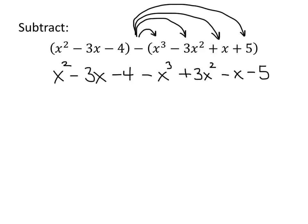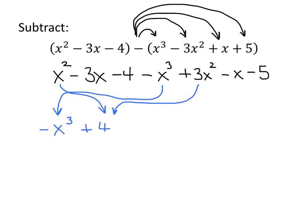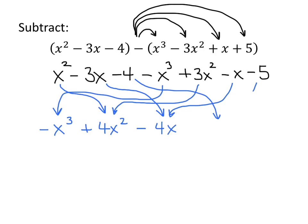So first we'll start with the highest power of x, which is x cubed. We only have 1x cubed with a negative 1 in front of it, so negative x cubed gets copied down. Now let's do the x squareds — we've got x squared plus 3x squared, so together that makes 4x squared. Next, we've got x to the first power, just x. Here we have negative 3x and here we have negative x, so together that makes negative 4x. And then finally, constants: we've got negative 4 minus 5, which is negative 9. And here's our answer.